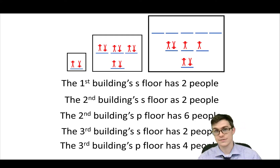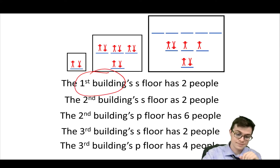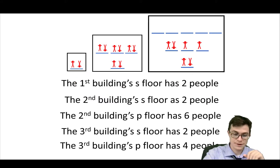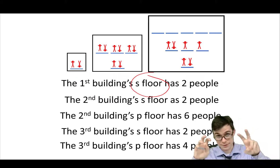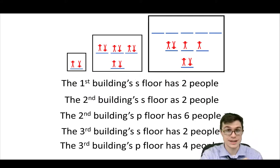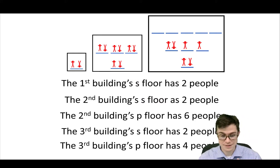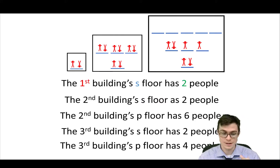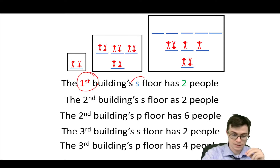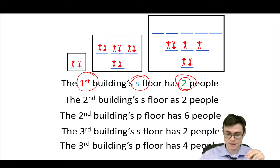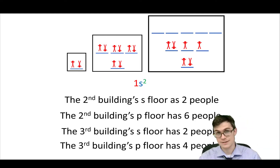This is basically the electron configuration. We don't have buildings, we have energy levels. We don't have people, we have electrons. And we don't have floors, we have sub-levels or shapes. But we don't write it like that because there are so many words. What we do is take the important information: the energy level, the sub-level or shape, and how many electrons are in there, and we stick them all together.